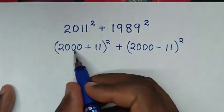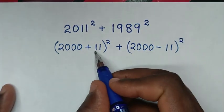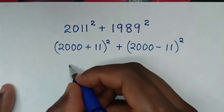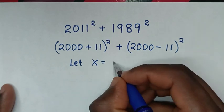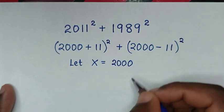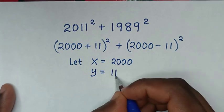In the next step, 2000 is common and 11 is common. So we let x equal 2000 and y equal 11.